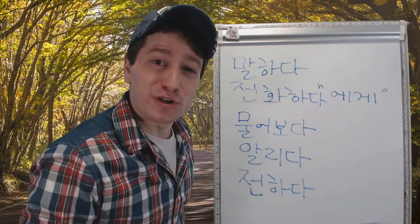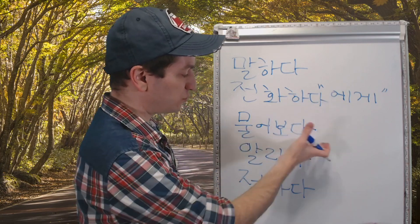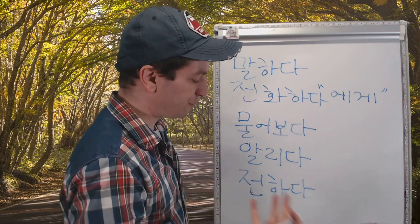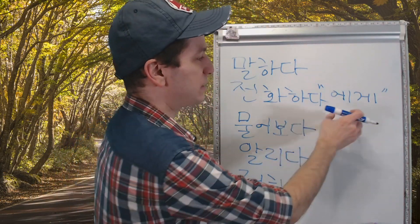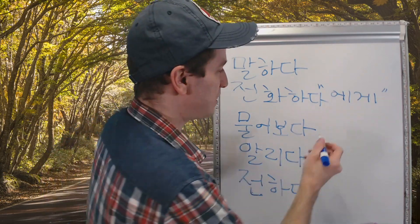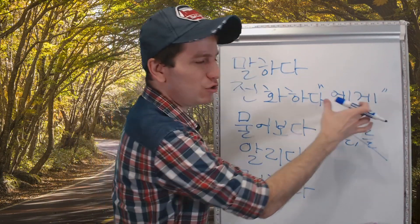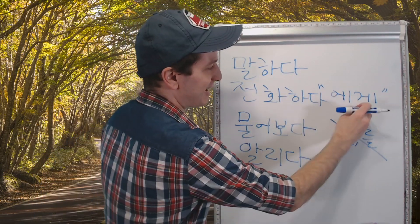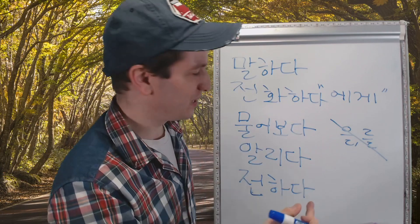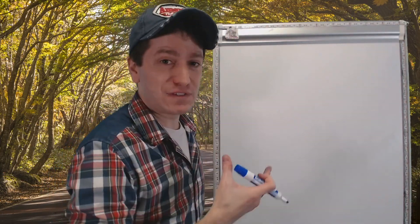Anytime you have any sort of communication word like 말하다 to say, 전화하다 to call, 물어보다 to ask, 알리다 to inform, 전하다 to convey, you have to mark the person you're doing that to with to. Never with the object marker. In Korean you would say, I told to him. I called to 찰수. 찰수에게 전화했어요. In Korean you have to say, I asked to the teacher. You have to use 에게 for the person who you're communicating to.